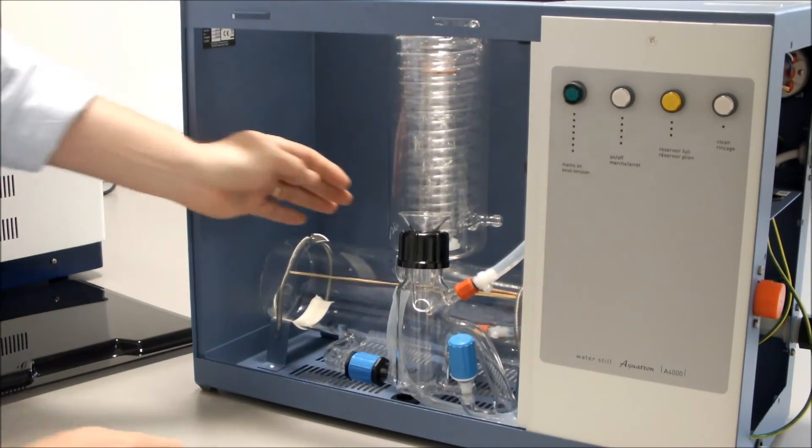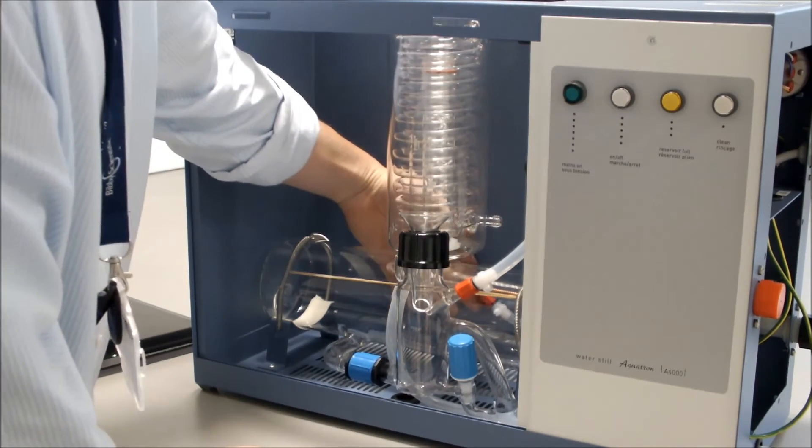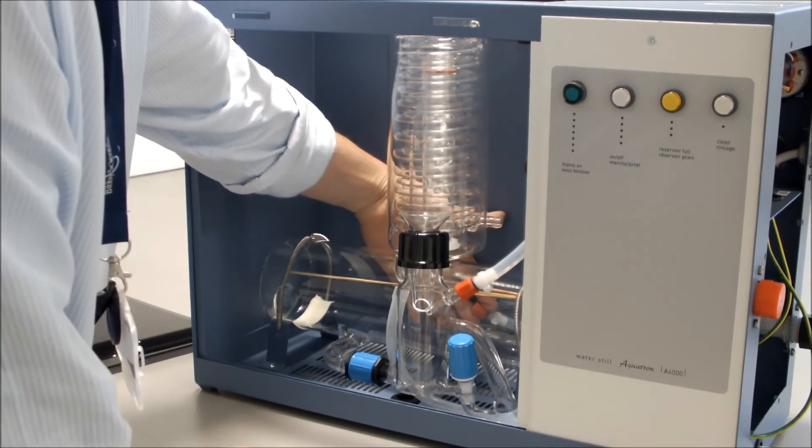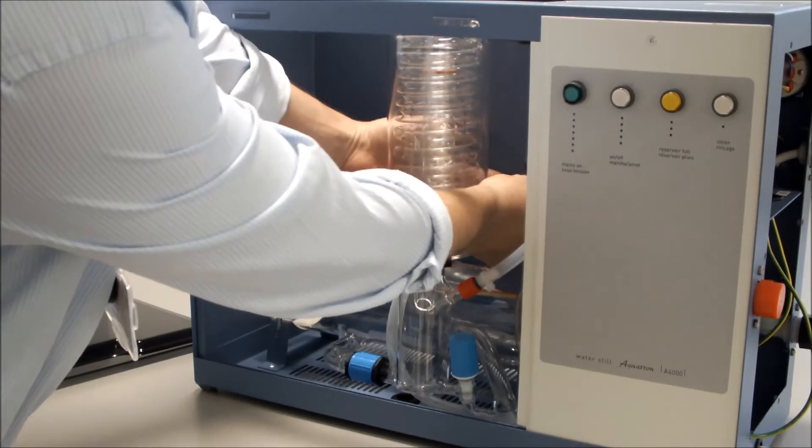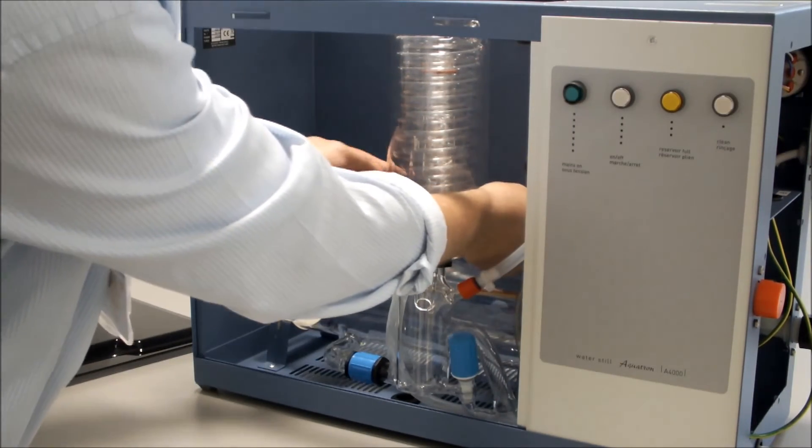The next thing to do is to connect our water flow level sensor, which is at the back, and we connect that to the bottom of the condenser.